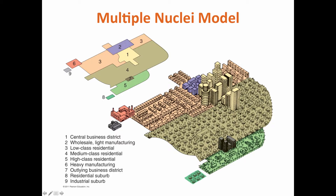Eventually, cities started growing and businesses started developing outside of the central business district. So we have outlying business districts where you will have factories, banks, and things of that nature, with cities becoming more separated and spread out. Another word for this is urban sprawl.